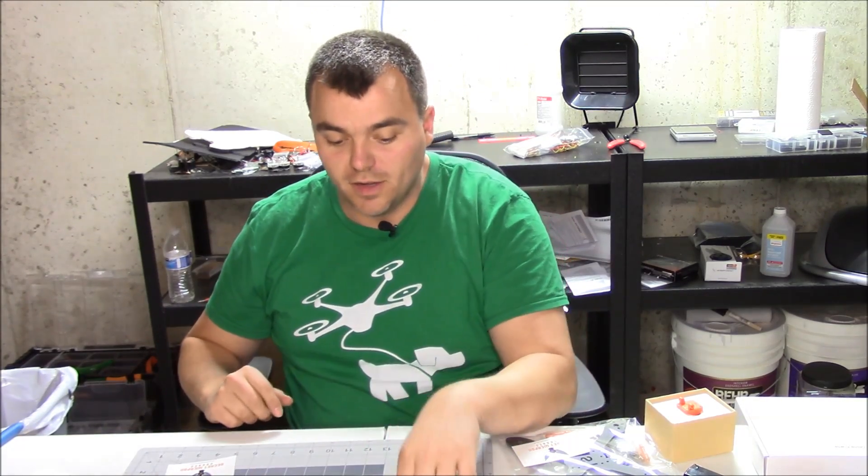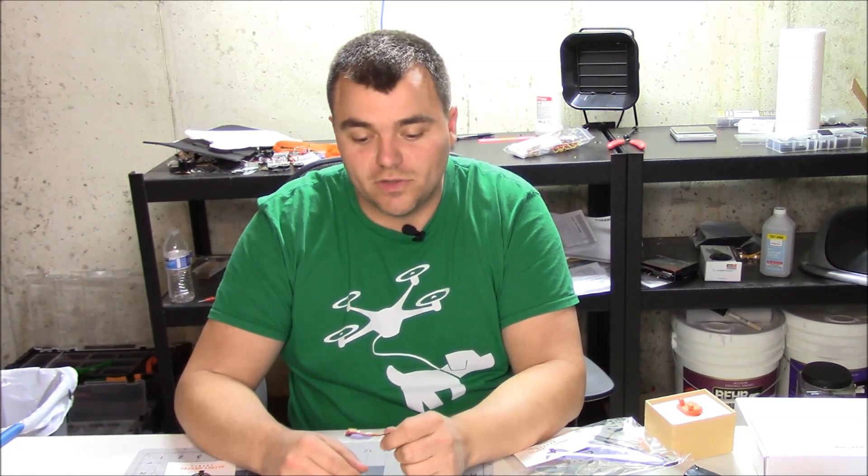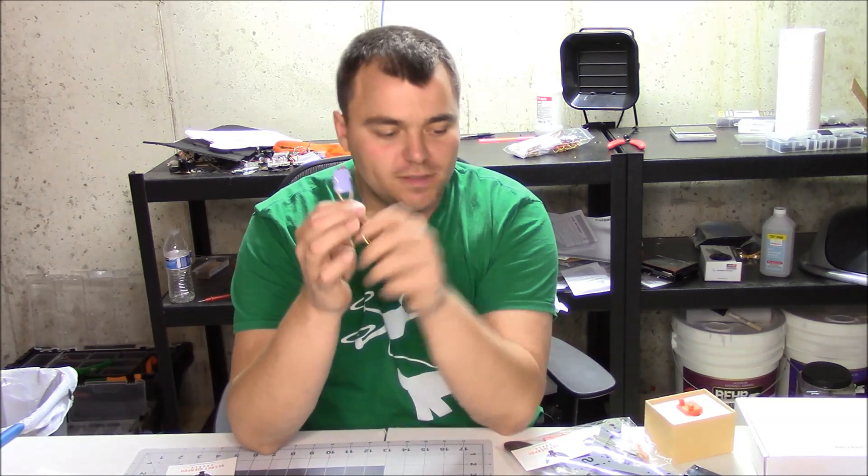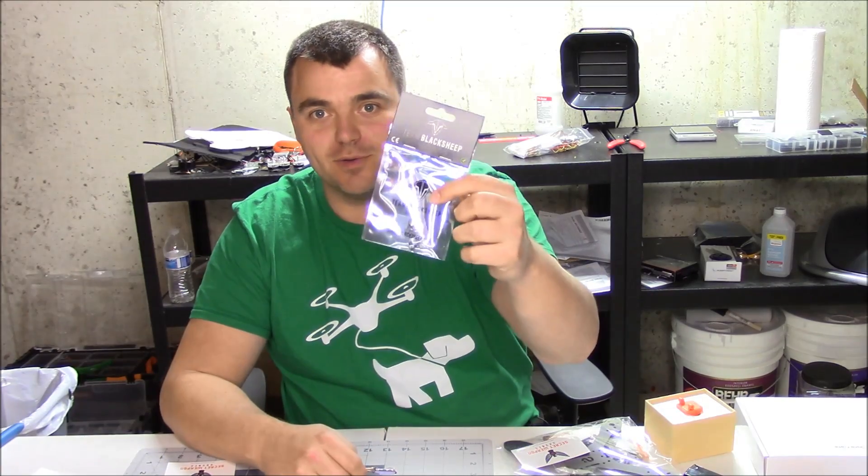So I'm switching everything over to the TBS UniFi Pro V2. The reason I chose the Pro V2 is because it's the smaller package but it only accepts five volts. The other reason I chose it is because it's all that I could find in stock everywhere.